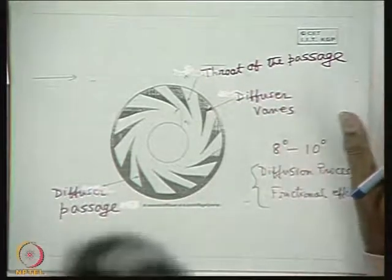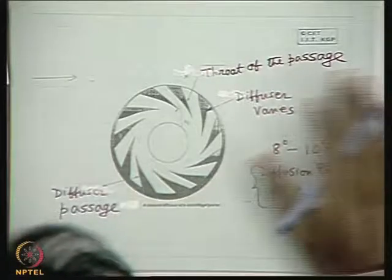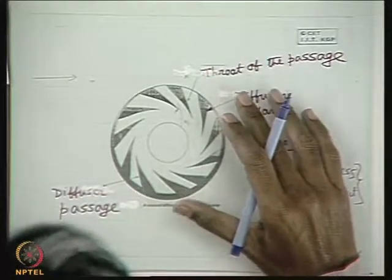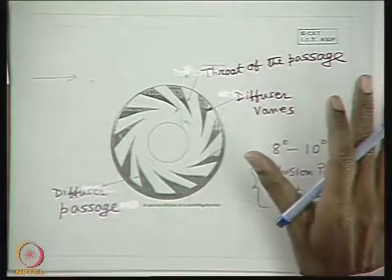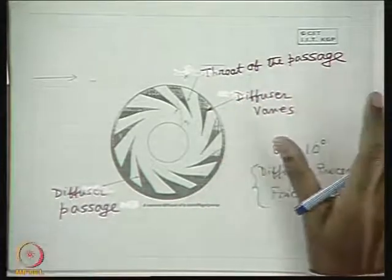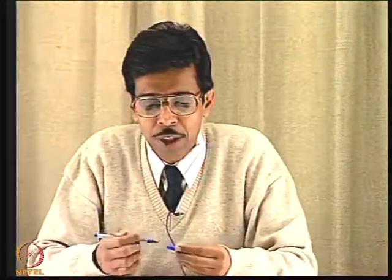In short, the principle of diffusers in a centrifugal pump is to convert kinetic energy into pressure energy, achieved by vane diffusers and also a volute chamber — also known as scroll casing. Now I will move to the phenomenon of cavitation in a centrifugal pump.